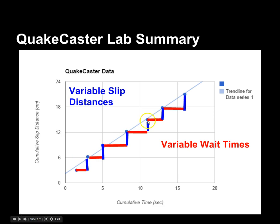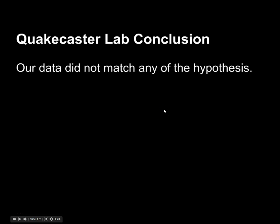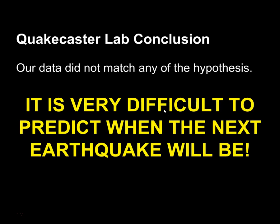We don't have a completely linear trend. From that, what we can say is our data didn't really support any of the hypotheses. In the end, it's very difficult to predict when the next earthquake will be. We have no way to really say we should have an earthquake in one month compared to any other month. We're just not there yet with our knowledge of earthquakes.